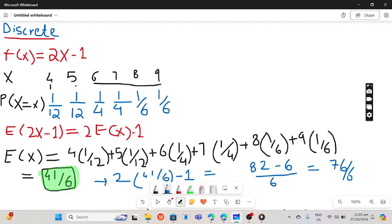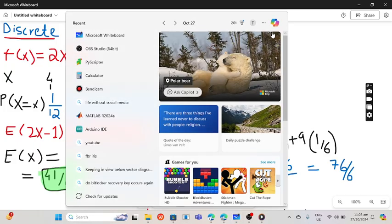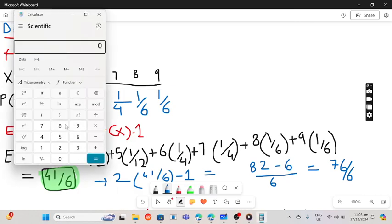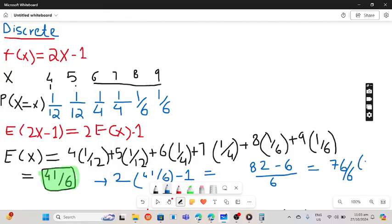82 minus 6 becomes 76 by 6. If you want this answer in decimals, so 76 divided by 6 you get 12.6. So this was the first technique to find expected value.